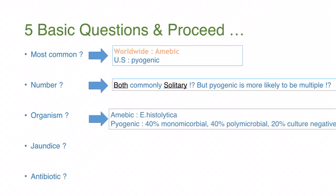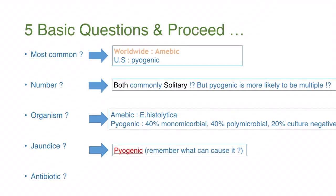For organism: in amoebic abscess, it's Entamoeba histolytica. In pyogenic, about 40% are monomicrobial, 40% are polymicrobial, and 20% are culture-negative. If caused by appendicitis or diverticulitis, the usual organisms are Bacteroides. If due to biliary source — the most common — the typical organism is gram-negative bacilli, most commonly E. coli.